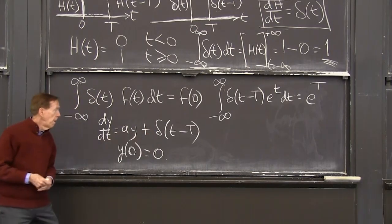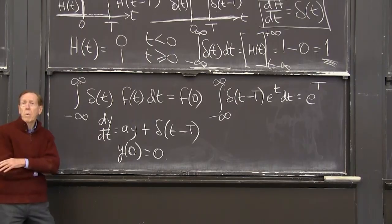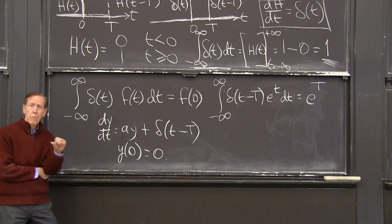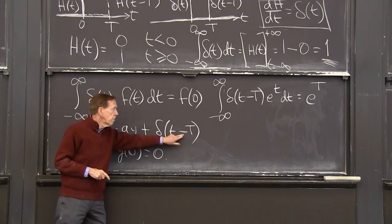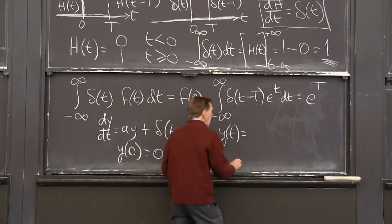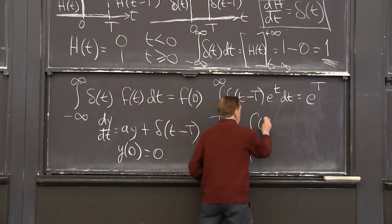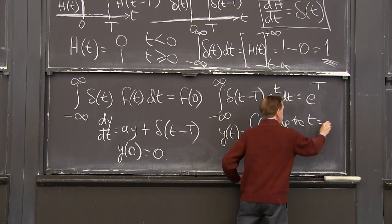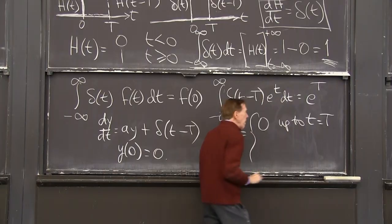I don't make any deposit at all, except at one moment, t equal capital T. And in that moment, I deposit $1. Because this is the unit delta. If I was depositing $10, I would make it 10 delta. OK. So we know what the solution is from a deposit of $1 made at one time, t equal to capital T. What is the solution? y of t, we have 0 up to t equal to T.